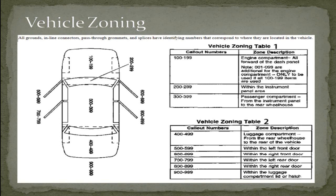All forward of the dash panel. 200-299 is within the instrument panel area. 300-399 is the passenger compartment from the instrument panel to the rear wheelhouse. 400-499 is the luggage compartment from the rear wheelhouse to the rear of the vehicle. 500-599 is within the left front door. 600-699 is within the right front door. 700-799 is within the left rear door. 800-899 is within the right rear door. 900-999 is within the luggage compartment lid or hatch.